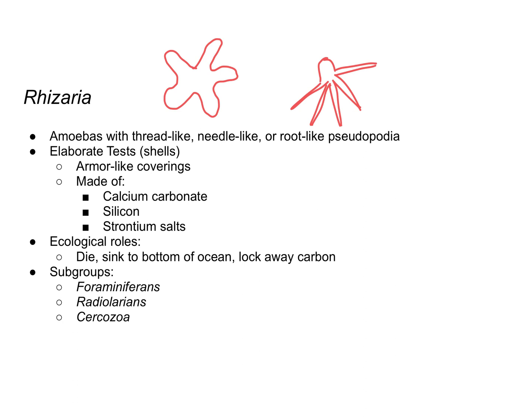Rhizaria have elaborate tests — remember, tests is just a specialized word referring to shells. These shells can be made of calcium carbonate, silicon, or strontium salts.